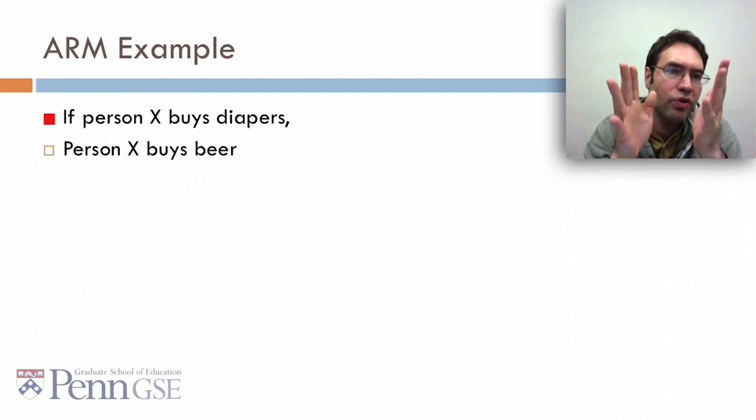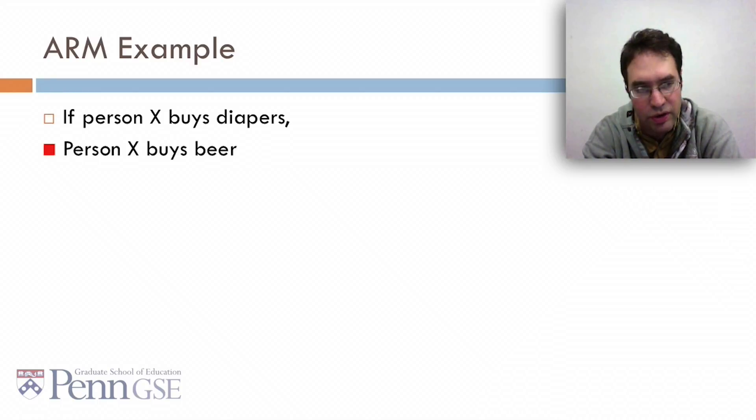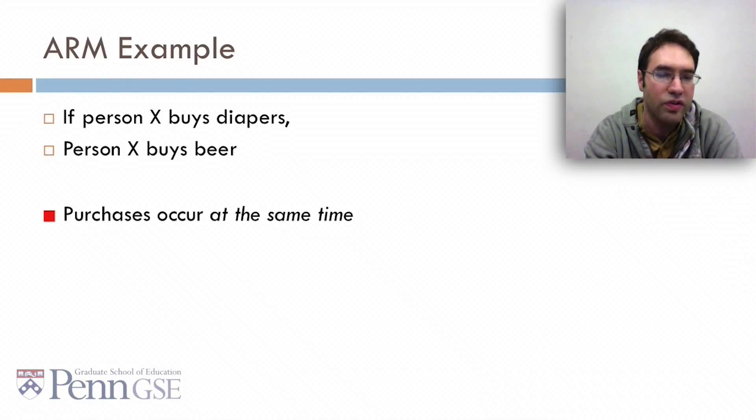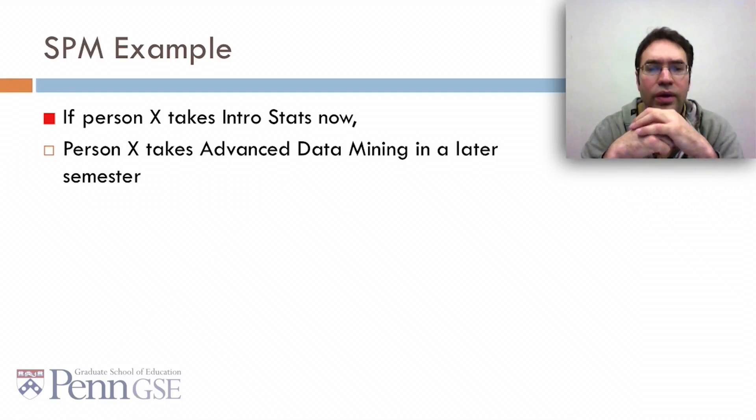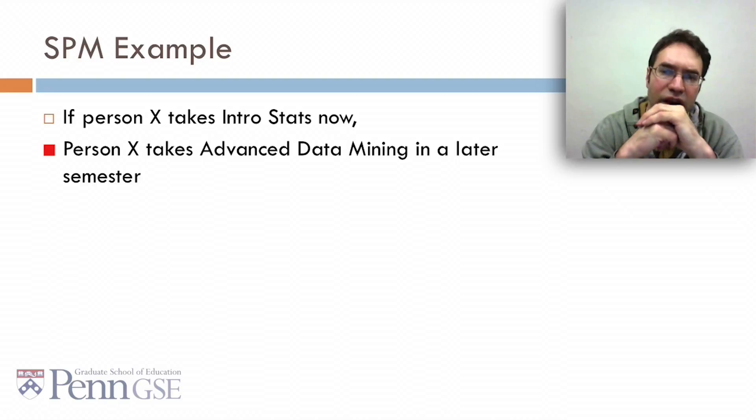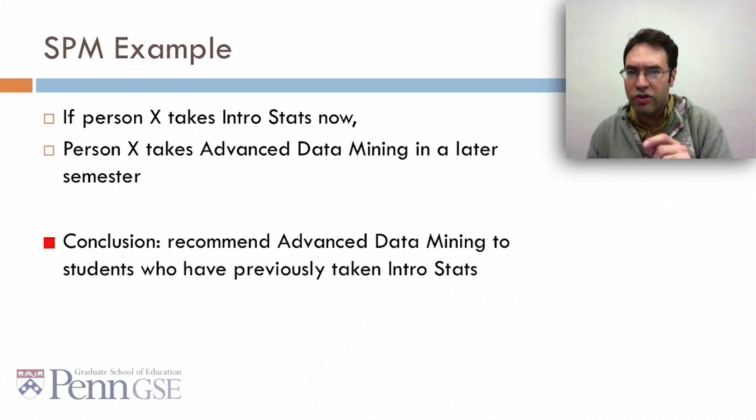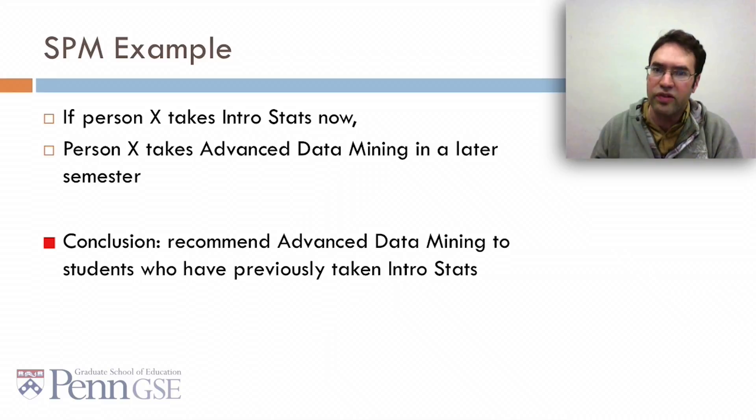In association rule mining, if person X buys diapers, person X buys beer, and the purchases occur at the same time. In sequential pattern mining, if person X takes intro stats now, then person X takes advanced data mining in a later semester. Recommend advanced data mining to students who've previously taken intro stats. Maybe they'll find it interesting, like some of their classmates did.